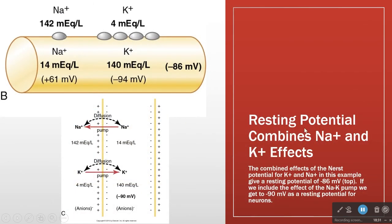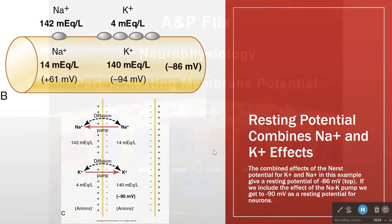So the resting membrane potential combines the sodium and potassium effects. The Nernst potential for sodium is positive; the Nernst potential for potassium is negative. Combining those two together in real life, we end up with minus 70 — or, for a nerve cell, around minus 86.